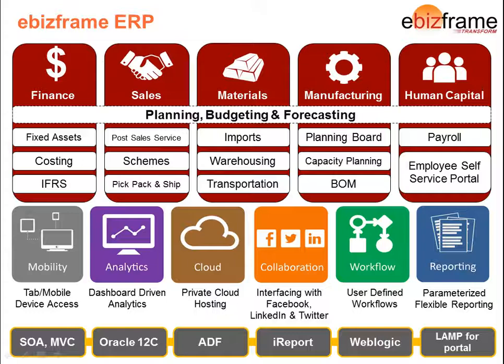The sales module covers post-sales service, price schemes as well as pick, pack and ship functionality. eBizFrame materials management covers imports, warehousing and transportation. Manufacturing covers discrete as well as process manufacturing and includes material as well as capacity planning. The human capital management functionality includes payroll and a comprehensive employee self-service portal.